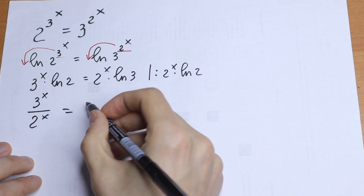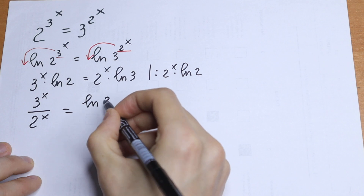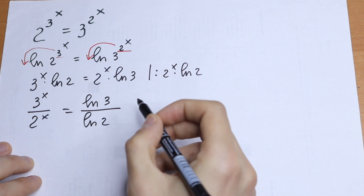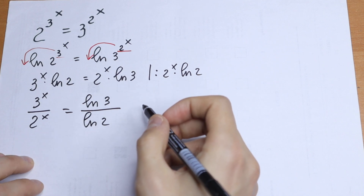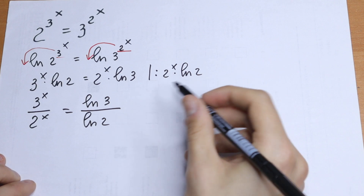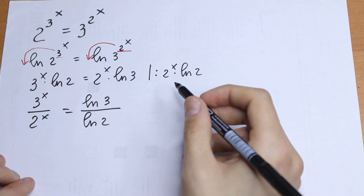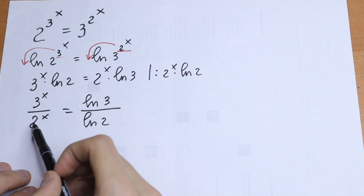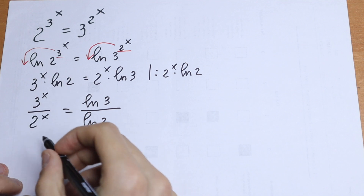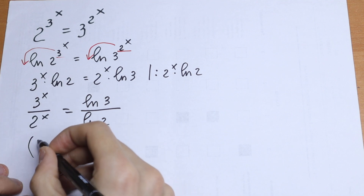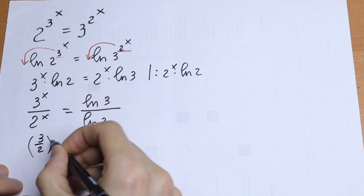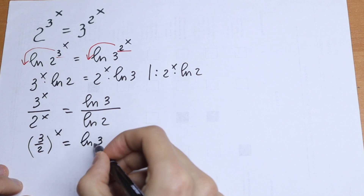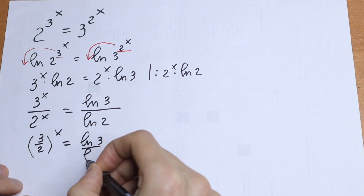We will have natural log 3 over natural log 2 on the right. Since we have different bases but the same exponent, we can combine the left side into one parentheses: 3 over 2, to the power x, equal to natural log 3 over natural log 2.